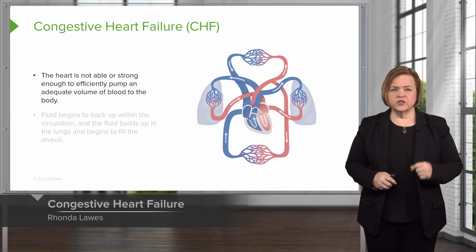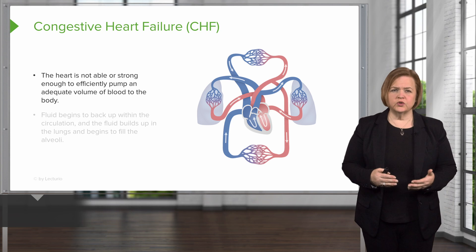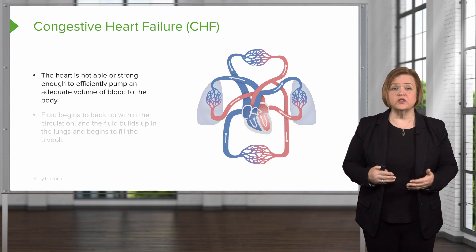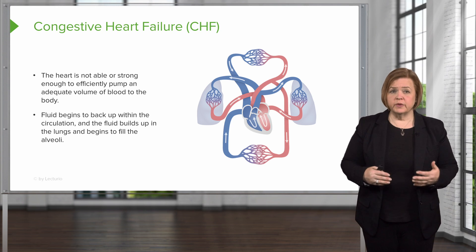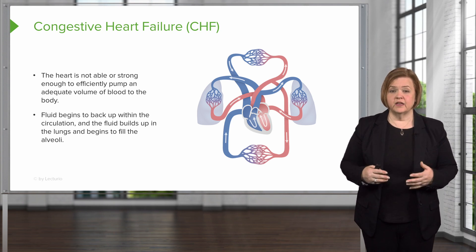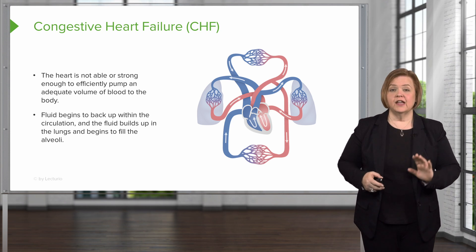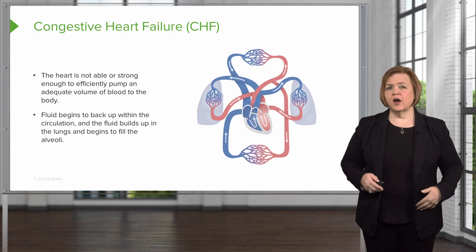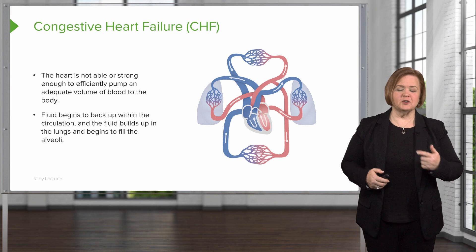Let's break down congestive heart failure. The heart is not strong enough to efficiently pump an adequate volume of blood to the rest of the body. Then fluid begins to back up within the circulation. After the fluid builds up in the lungs, it begins to fill the alveoli with fluid — so now instead of alveoli, you've got little water balloons in your lungs. I want to invite a friend to help us understand this even more.